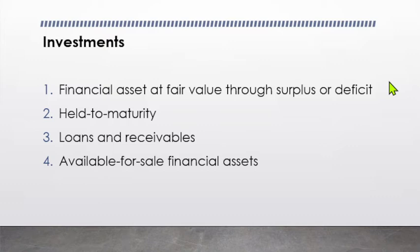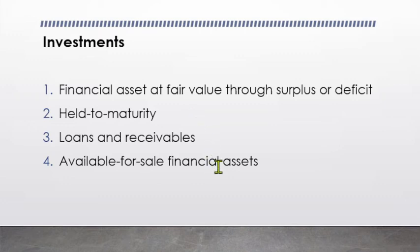Available for sale financial assets are subsequently measured at fair value, and any changes in fair value are recognized in equity. From the illustrations, for financial asset at fair value through surplus or deficit — classified as held for trading — we debit financial asset held for trading, and any transaction cost is charged to other financial charges since initial measurement is at fair value. For held to maturity, we use investments in treasury bills, local. For available for sale financial assets, we use investment in stocks or bonds, depending on whether it is stocks or bonds.